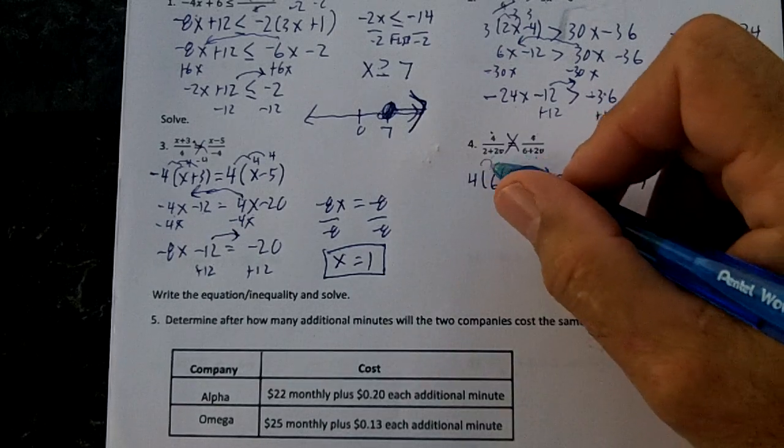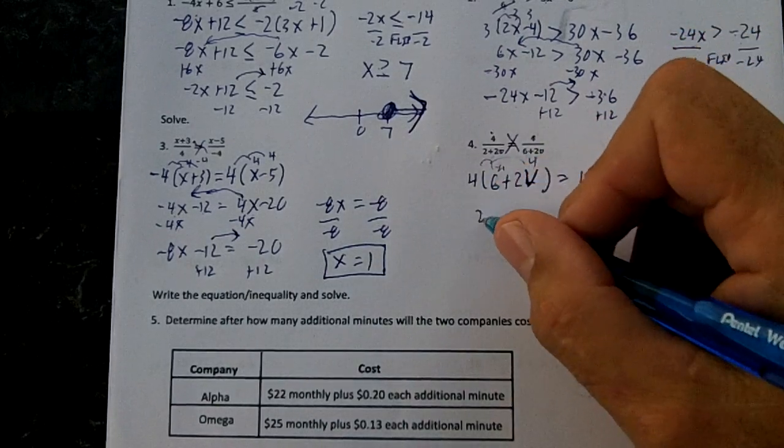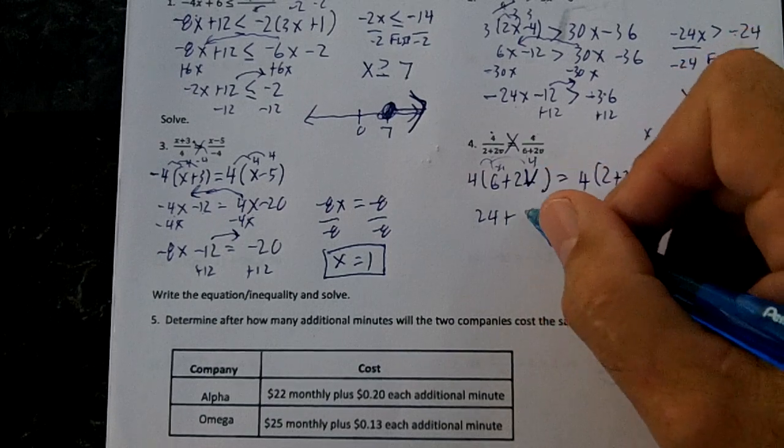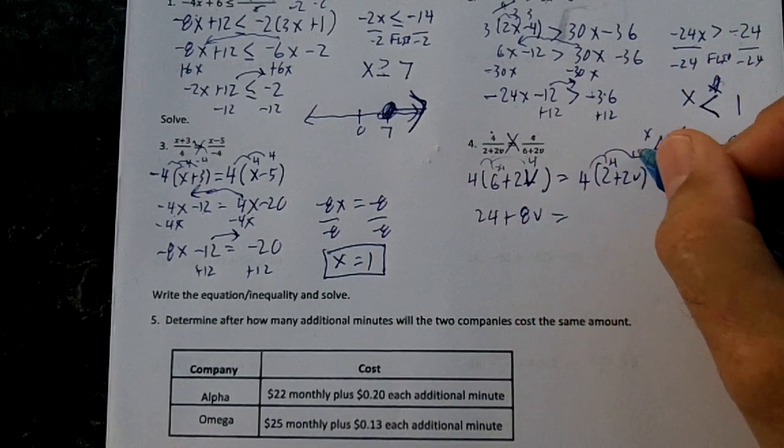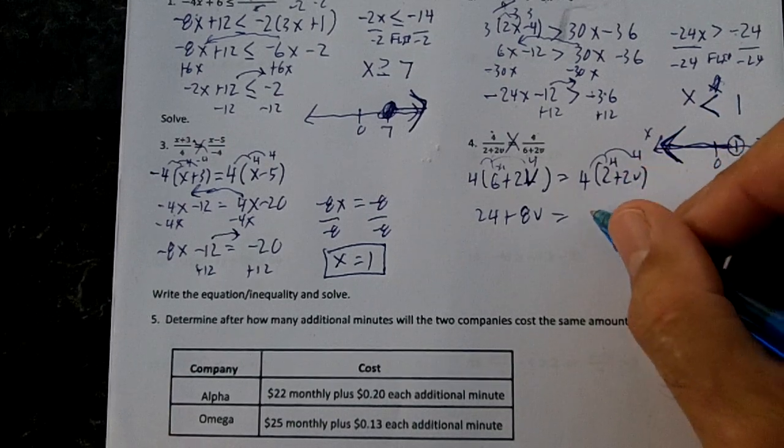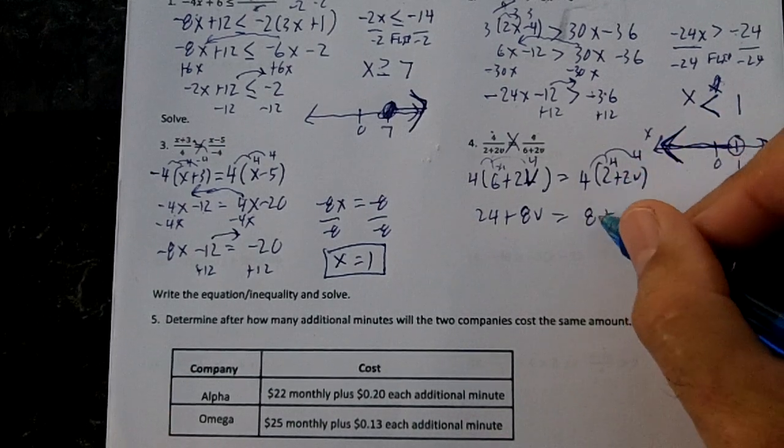So I'm going to distribute the 4s. 4 times 6 is 24 plus 4 times 2v is 8v equals distribute these. Pretty easy. We don't have any negatives. 4 times 2 is 8 plus 4 times 2v is 8v.